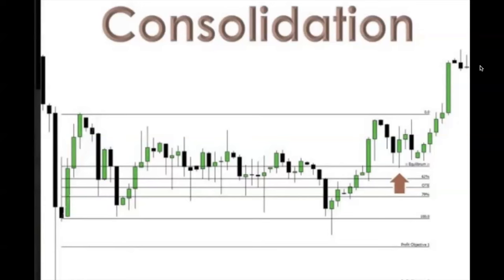The fib range is drawn from the body lows and the body highs. Right here where this arrow is showing, that's equilibrium. Look how the market — exactly as I taught it in the last video — is playing with this level. This candle right here, this dark bearish candle, its high closed below the wick or that 50% level.